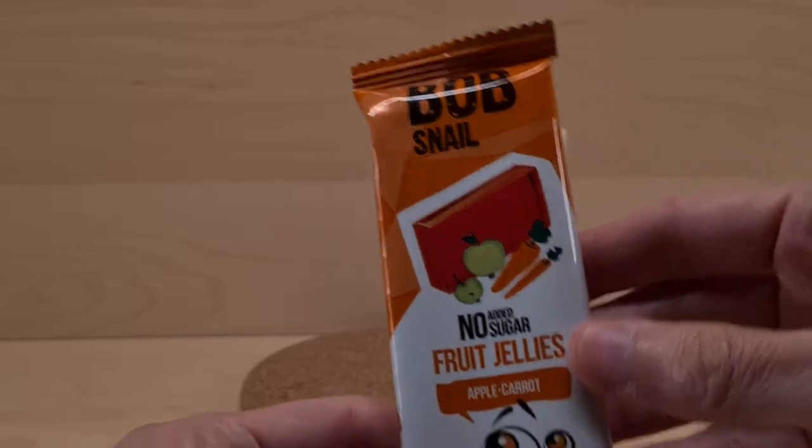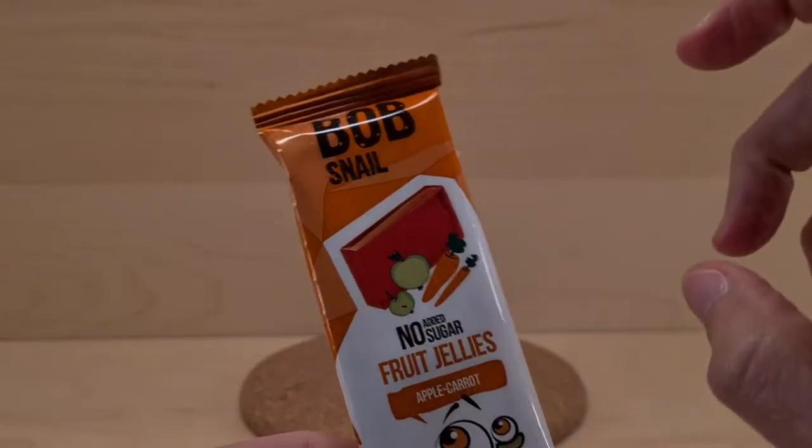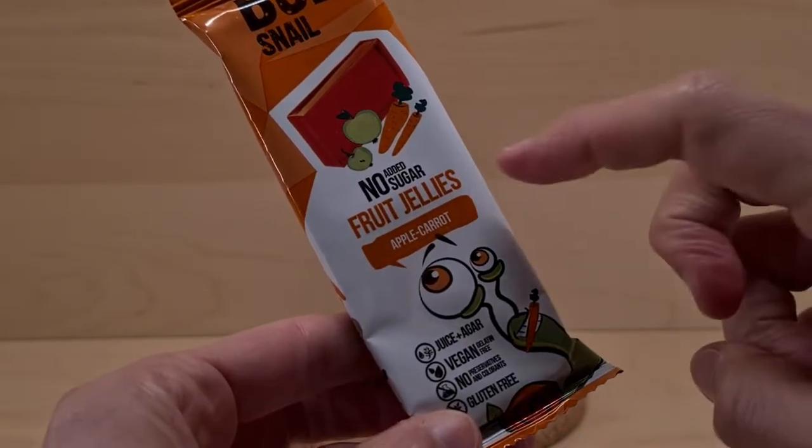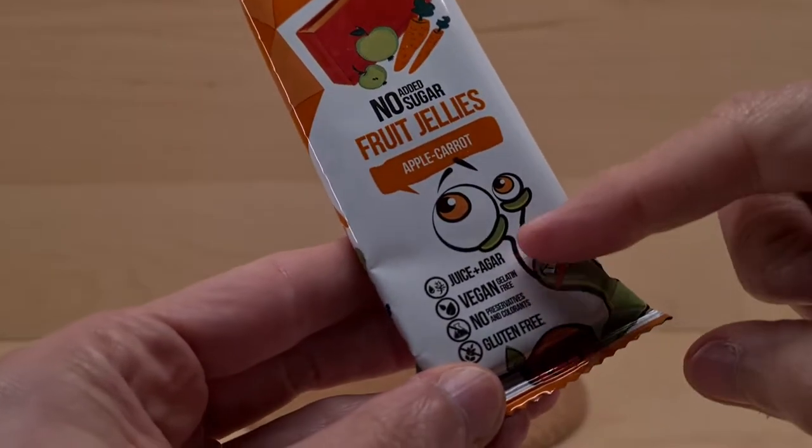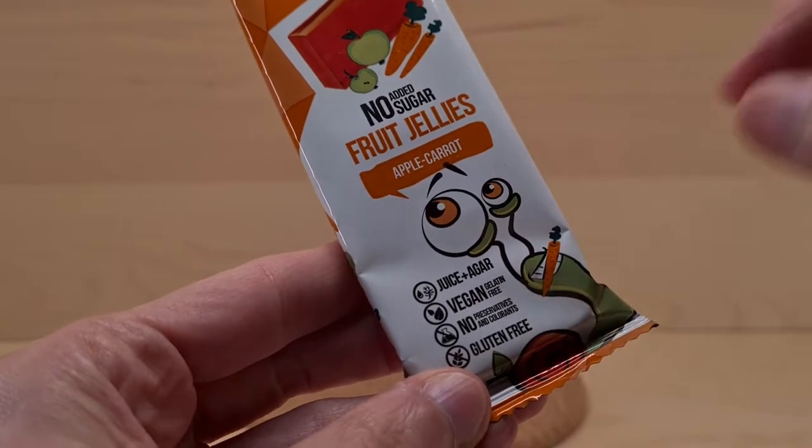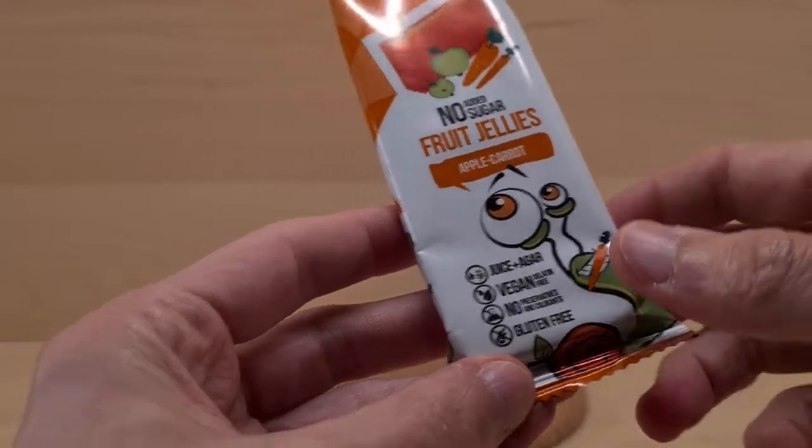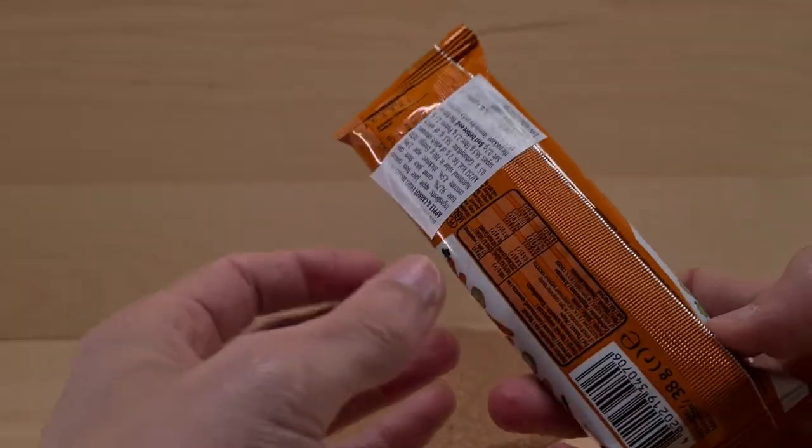So this is Bob Snail. No 'the' on this one, because the previous one had 'the'. It's no added sugar fruit jellies, carrot and apple. It's juice and agar, so it's vegan and gelatin-free. No preservatives and colorants, and it's gluten-free. It's all good.